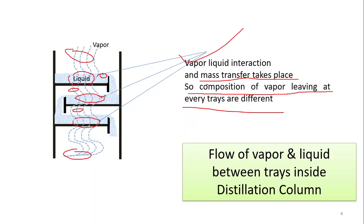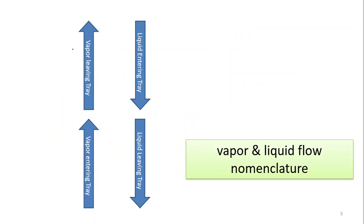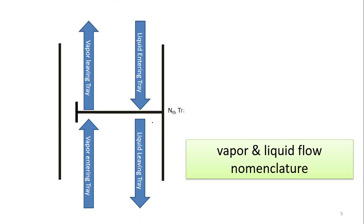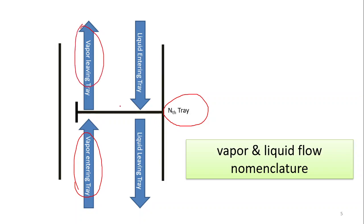Now let us look at the nomenclature of vapor and liquid flowing inside. Taking a single tray as example — this is the nth tray. Any tray above the nth tray is called the (n-1) tray, and any tray below it is the (n+1) tray. Trays are counted from top to bottom: 1, 2, 3, 4... So vapor entering the nth tray comes from the (n+1) tray. One vapor is entering the tray and one is leaving, one portion of liquid is entering and one is leaving.